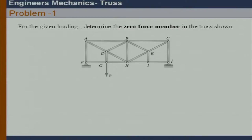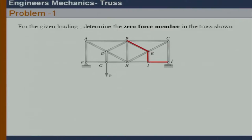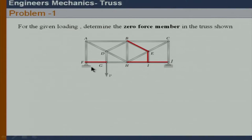Starting with joint I: IE equals zero. If IE equals zero, going to joint E: BE equals zero, because taking perpendicular equilibrium with respect to member CE, there is no force to balance BE. Also, IJ equals zero because only the roller reaction balances it. If IJ equals zero, then IH equals zero. Then FG equals zero because there is no horizontal force in this truss. Therefore GH equals zero as well.